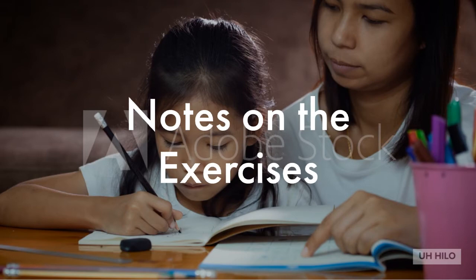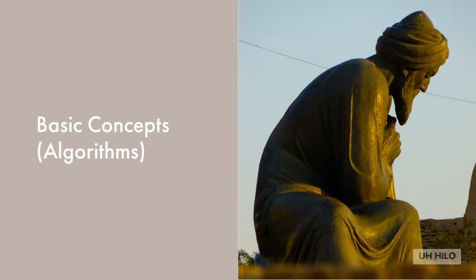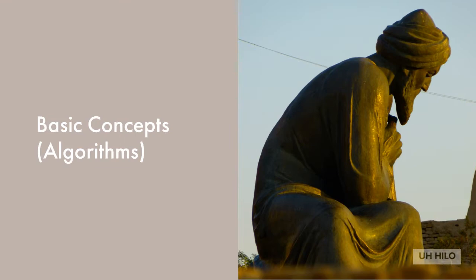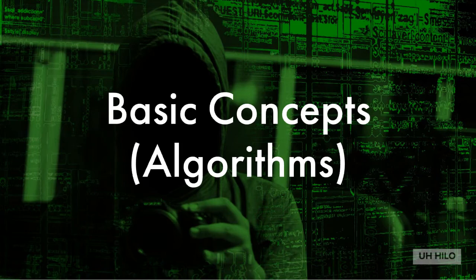The text begins with a chapter on basic concepts, the first of which is algorithms. The term 'algorithm' comes from the Persian textbook author Muhammad ibn Musa al-Khwarizmi, who developed his work on rules for restoring and equating around 825 CE. The definition used by Knuth is a finite set of rules that gives a sequence of operations for solving a specific type of problem. Knuth indicates that there are five important features of algorithms.